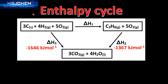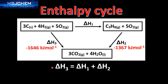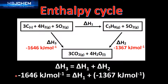Let's have a look at another enthalpy cycle. If we are given the values for delta H3 and delta H2, we can calculate the value for delta H1. Using the equation delta H3 equals delta H1 plus delta H2, we plug in the values for delta H3 and delta H2 and rearrange to calculate delta H1, which is negative 279 kilojoules per mole.